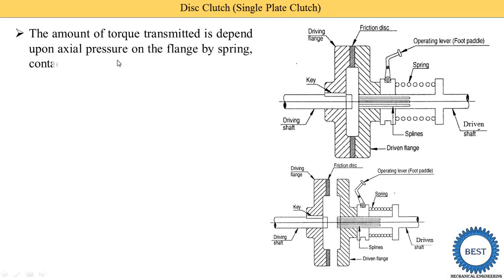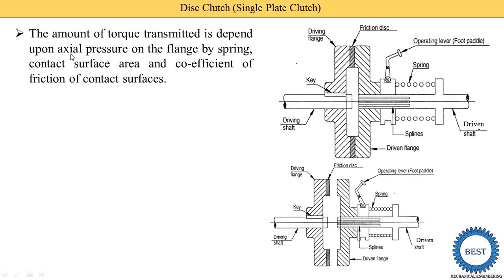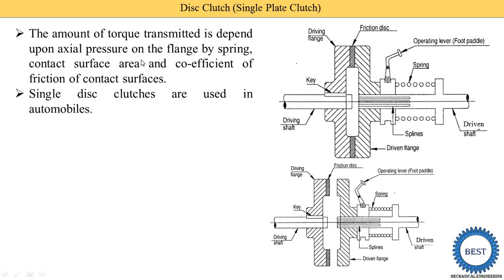The amount of torque transmitted depends upon different factors. First factor is the axial pressure on the flange by the spring. Second is the contact surface area — how much contact area is available between the two flanges and the friction disc. The third factor is the coefficient of friction of the contact surface. The amount of torque transmitted depends on these three different factors.